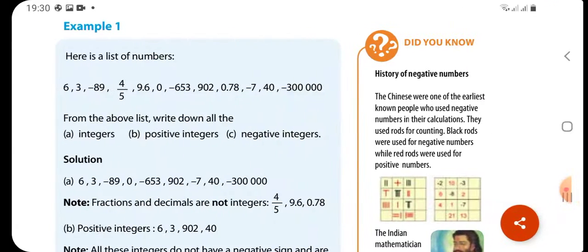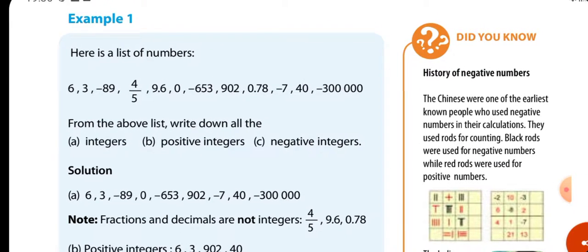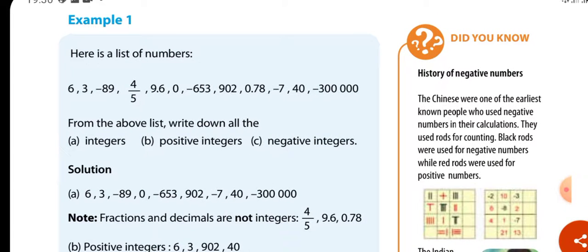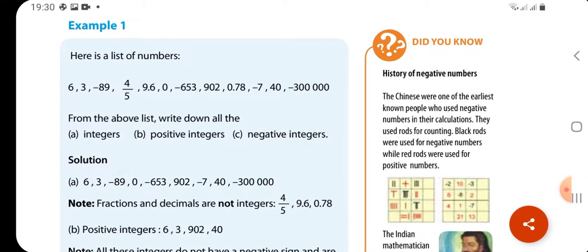Here is a list of numbers: 6, 3, negative 89, 4/5, 9.6, 0, negative 653, 902, 0.78, negative 7, 40, negative 300,000. From the above list, write down all the integers.